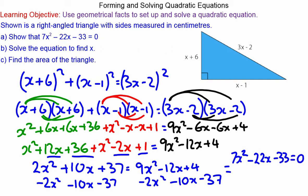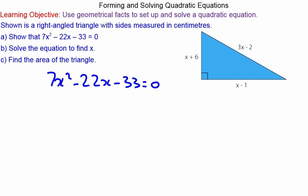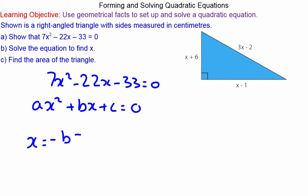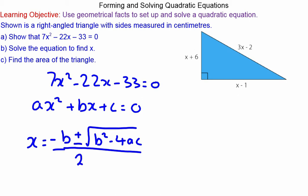We've established this quadratic equation. Now we're going to use the quadratic formula to find the value of x. We equate it with ax² + bx + c, the general quadratic form, where a = 7, b = -22, and c = -33.